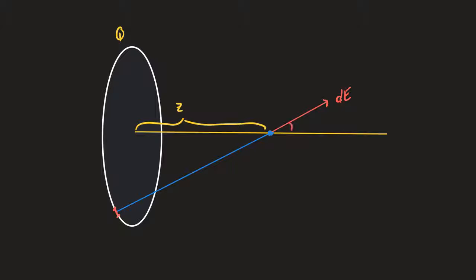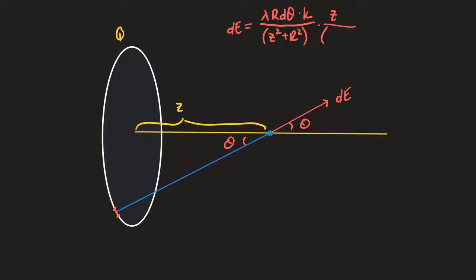Yesterday we ended right at the point where we were showing the answer. We had the piece of the electric field equal to a result that came from finding the linear charge density, based on r dθ times k, all over z squared plus r squared, times z over (z squared plus r squared) to the one half. And our charge density was q over 2πr.